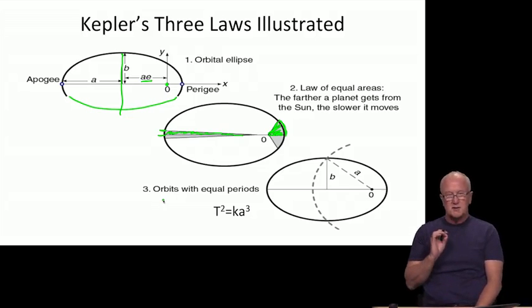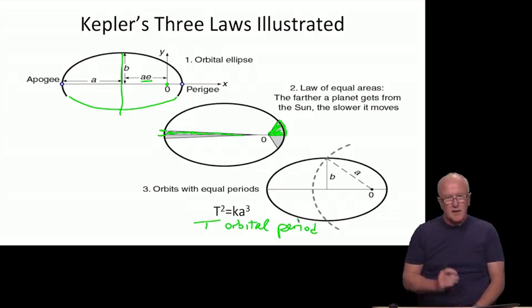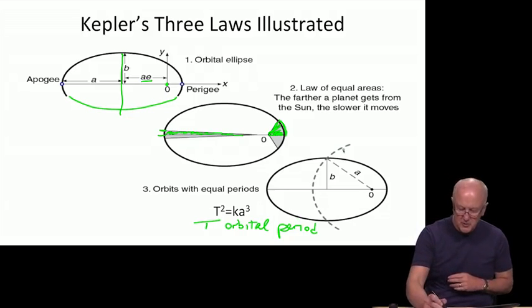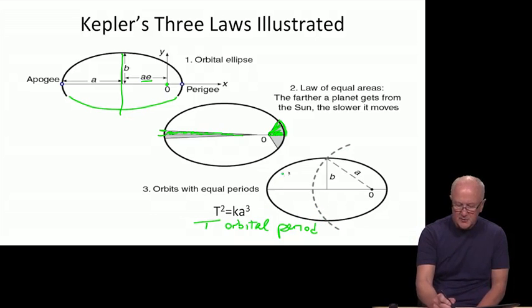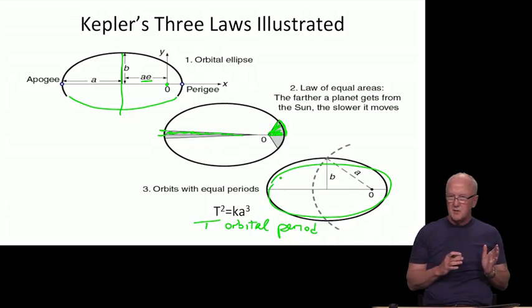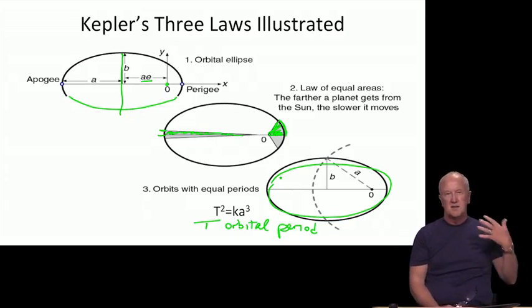And then finally, law number three was an expression for what was the amount of time to get all the way around the ellipse. In other words, what's the orbital period? Capital T here is the orbital period. What Kepler found is that that orbital period squared is proportional to the semi-major axis a cubed. That was a nice connection too. It meant that you could have orbits of very different shapes, a very circular one like the dashed thing shown here, and an elliptical one, in fact quite an eccentric one shown by this ellipse here. Even though they had very different shapes, if they had the same semi-major axis, lowercase a, they would have the same orbital periods.